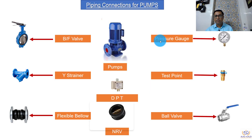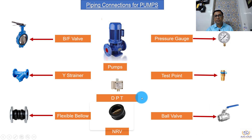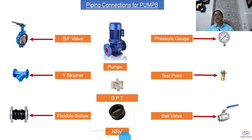In piping connections for pumps, we have many other items that need to be covered. First is the butterfly valve — it looks like that, and I have created some photographs for better visibility and understanding. Then we have a Y-strainer, flexible bellows, the pump itself, pressure gauges, test points, ball valves, differential pressure transmitter, and non-return valves — also called check valves. These are the important elements in any pump piping connection, and I thought I would give you a brief idea of what goes into a pump connection apart from piping.